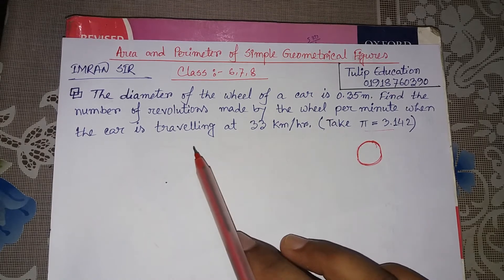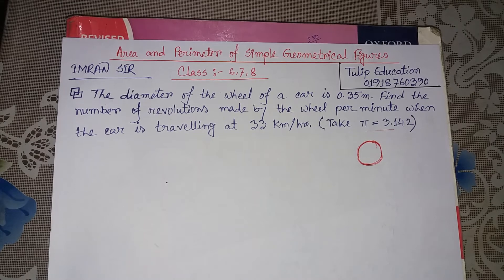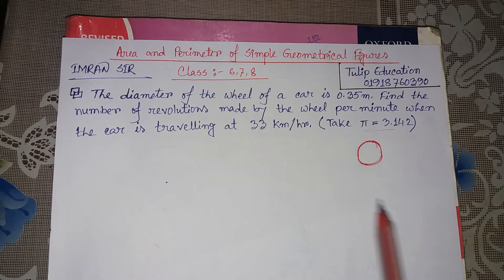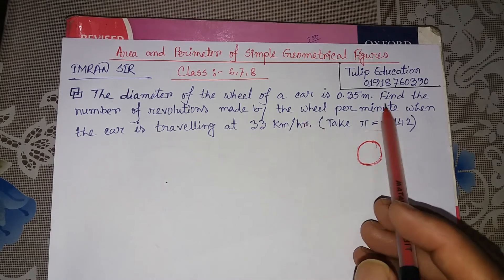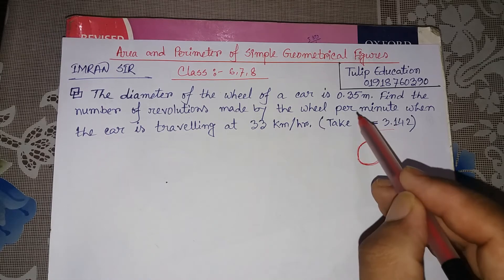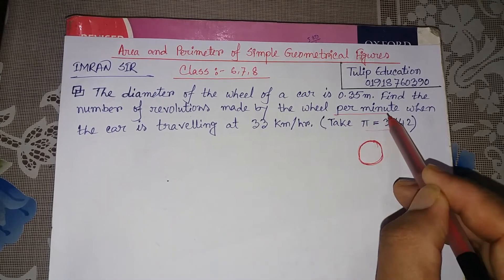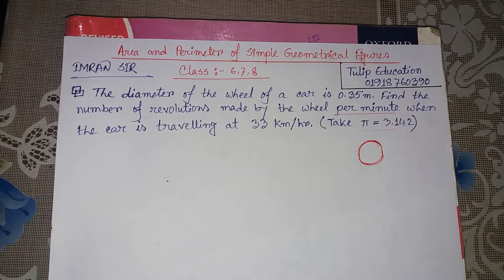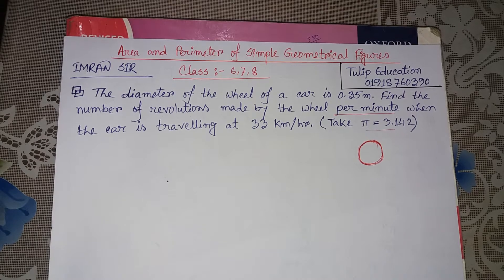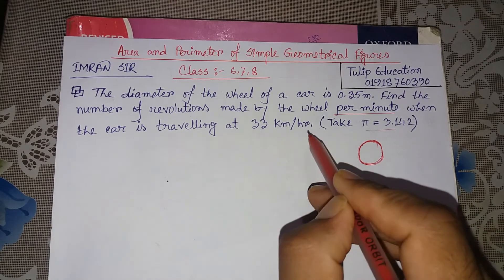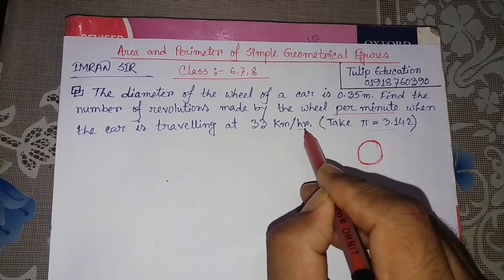Our car is traveling at 33 km per hour — that means the car covers 33 km in 1 hour. But we are talking about the number of revolutions made by the wheel per minute. One minute gives us a complete rotation. The number of revolutions is per minute.